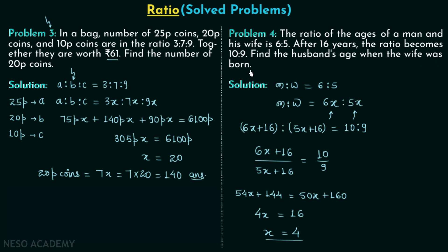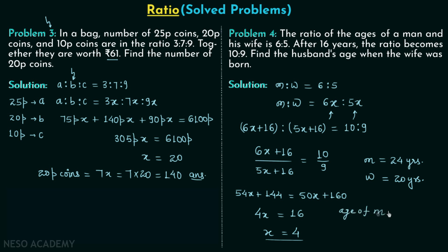Now we can find the present ages. The present age of the man is 6X = 6 × 4 = 24 years. The present age of the wife is 5X = 5 × 4 = 20 years. The wife was born 20 years ago, so the husband's age when the wife was born = 24 − 20 = 4 years. That is our answer.